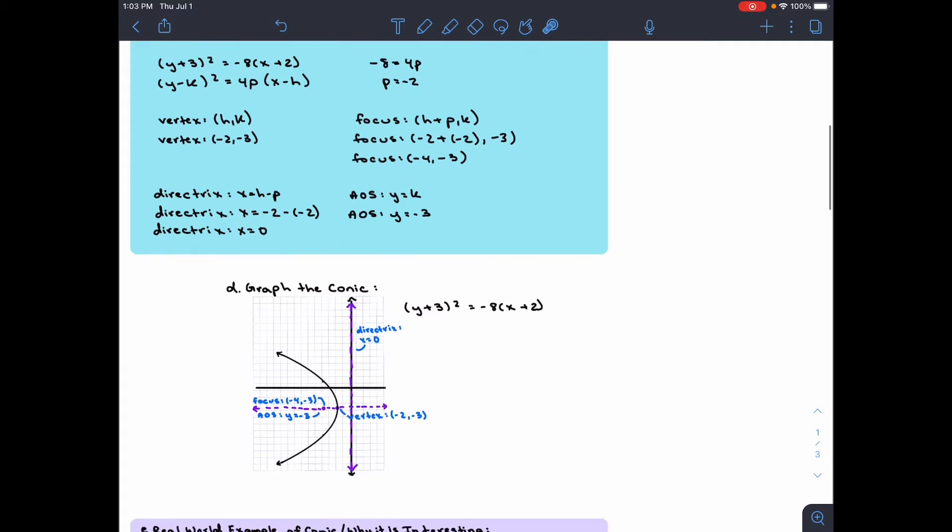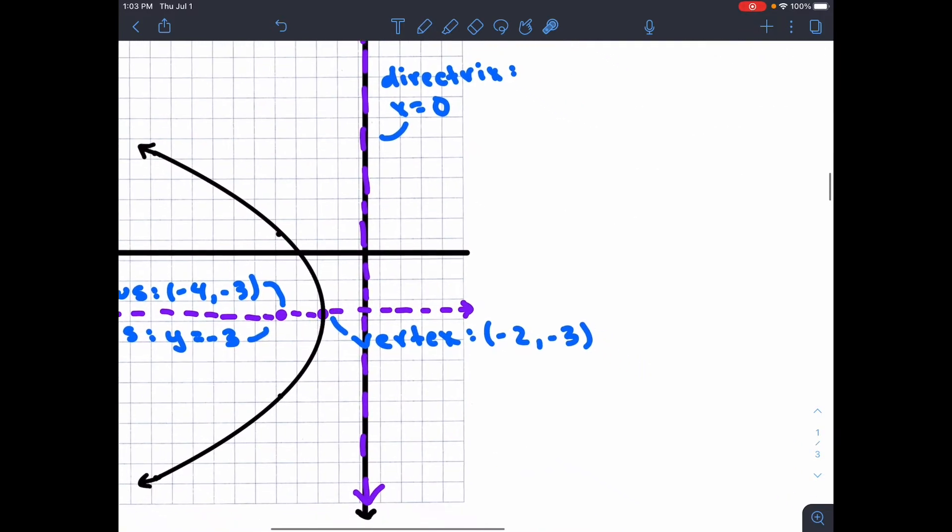First, we need to find the vertex. To find the vertex, we use (h, k). Based on this equation, we can find h and k. We know that -h = +2 and -k = +3, so the vertex equals (-2, -3). We graph this point right here.